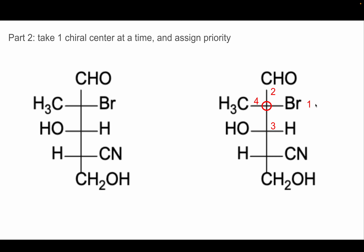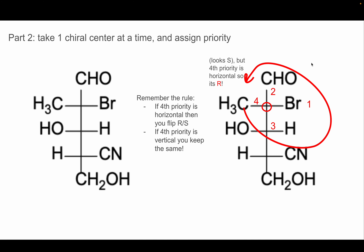Now we draw an arrow going 1, 2, 3, 4 and it goes counterclockwise. There's an important rule for Fischer projections: if the fourth priority group is in a horizontal position, do your normal assignment — draw the arrow, see clockwise or counterclockwise, assign R or S — but then flip it. If the fourth priority is vertical, just keep it the same. In this case the methyl group is in the horizontal position and it's priority four, so even though it looks counterclockwise which would be S, we have to flip it. So instead of S, it's actually R.